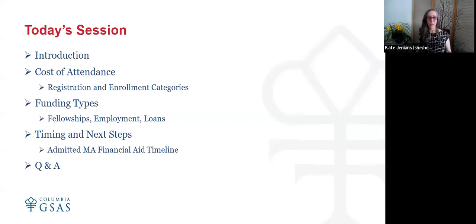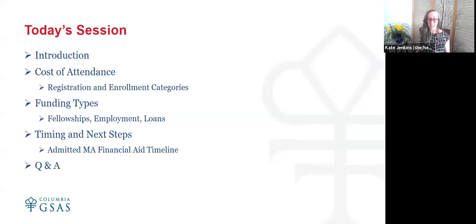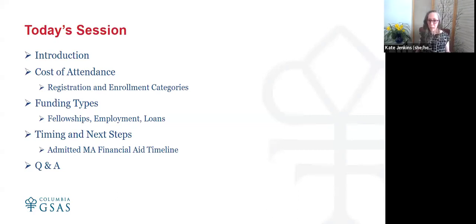We'll go into detail about the different funding types available to you. The most popular are fellowships and scholarships that you don't have to pay back. For those interested in working on campus and employment opportunities, as well as those looking to finance using loans, we'll go over the different types of aid available and the steps and timing. At the very end of this presentation, there is an admitted students financial aid timeline. We'll also have a question and answer session at the end.